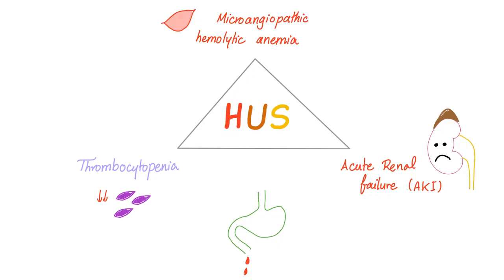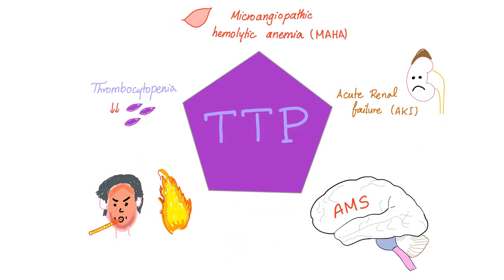Review: HUS is a triad of microangiopathic hemolytic anemia, thrombocytopenia, and acute renal failure. Remember the bloody diarrhea from E. coli. TTP is a pentad — but note there is no bloody diarrhea in TTP. The five symptoms are: microangiopathic hemolytic anemia, thrombocytopenia, acute renal failure, fever, and neurological symptoms — usually altered mental status.